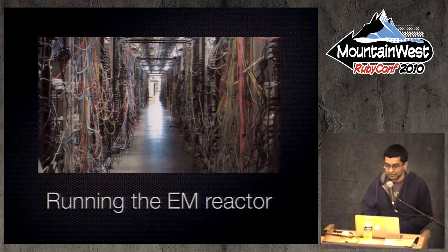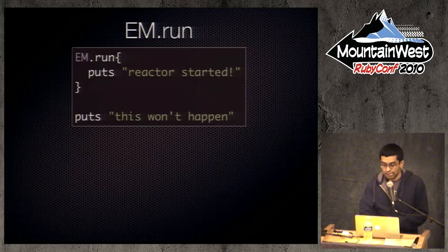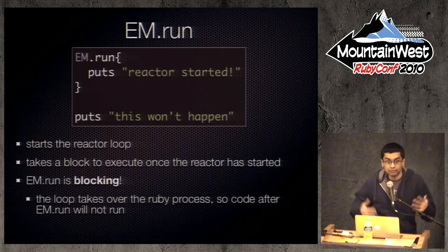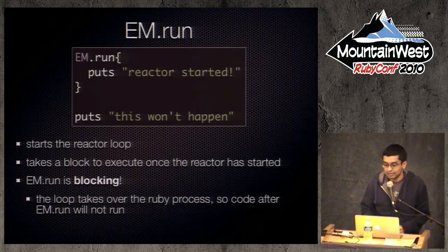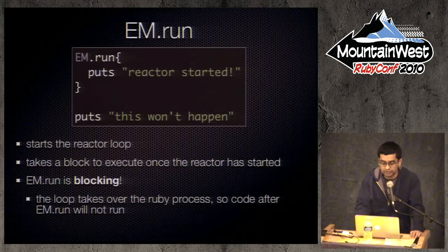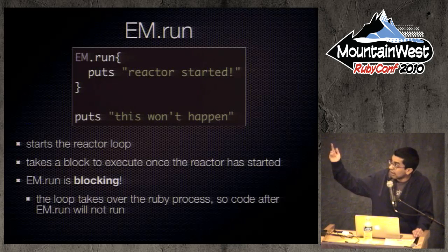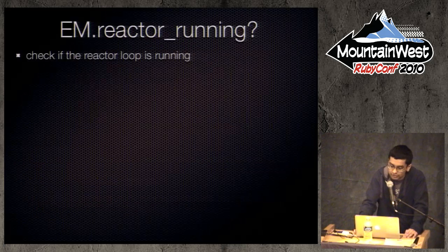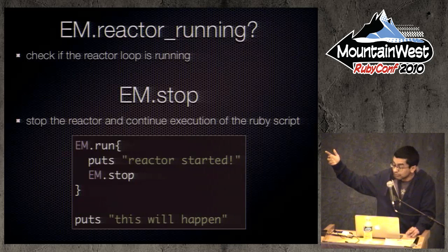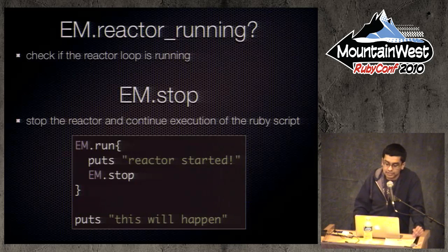How do you run the reactor? There's a simple API: EM.run. It starts up the while loop, takes a block, and as soon as the loop is running it invokes that block. Keep in mind it is a while loop — code after it won't run. It basically takes over your Ruby process. There's also a simple API to check if the reactor is running. And you can stop the reactor with EM.stop — as soon as you stop it, execution continues and code after it will run.